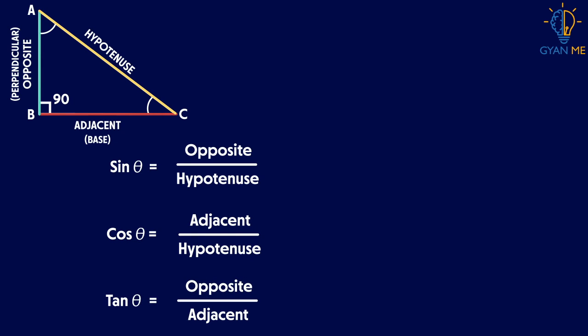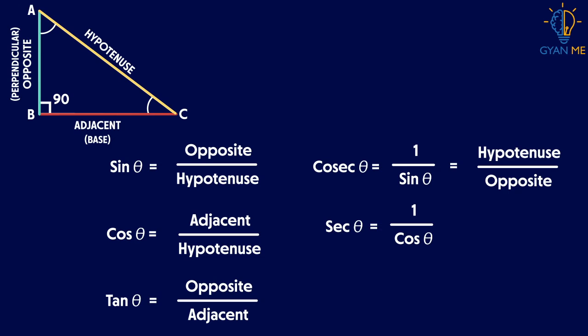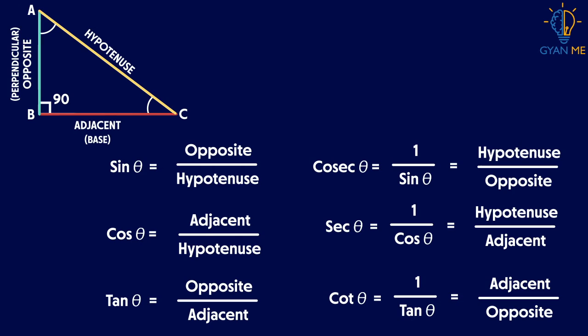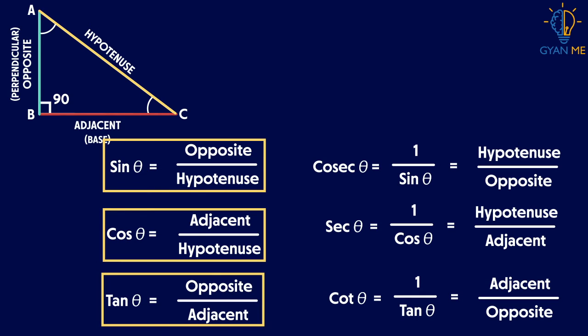And these three reverses are cosec, the reverse of sine, sec, the reverse of cos and cot, the reverse of tan. So what we have is sine is the ratio of the opposite side to the hypotenuse, cos is the ratio of the adjacent side to the hypotenuse, and tan is the ratio of opposite side to the adjacent side.